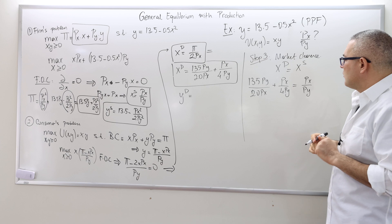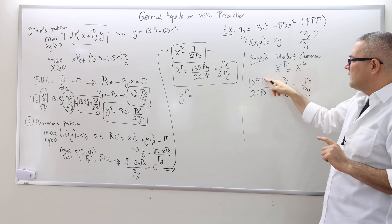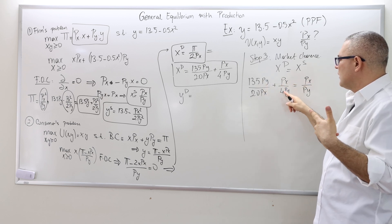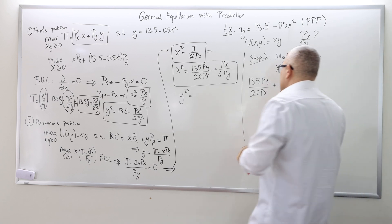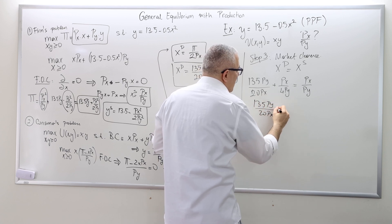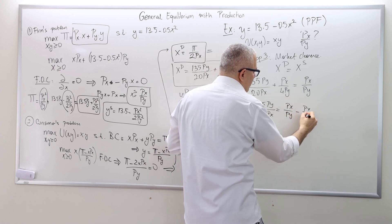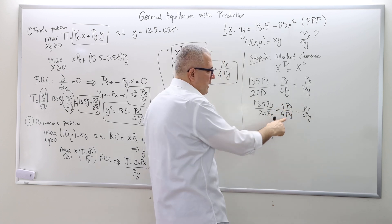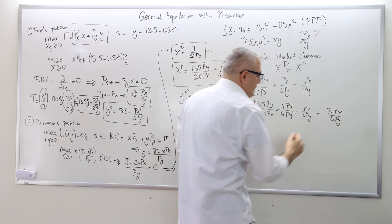The demand for good X is: 135·PY/(20·PX) plus PX/(4·PY), and that has to equal the supply of good X, which is PX divided by PY. This term and that term are related — PX over PY and PY over PX. Send the PX/(4·PY) term to the other side: 135·PY/(20·PX) = PX/PY minus PX/(4·PY). That equals 4·PX/(4·PY) minus PX/(4·PY), which is 3·PX/(4·PY).